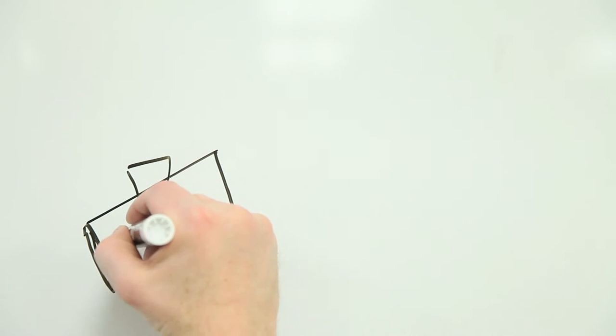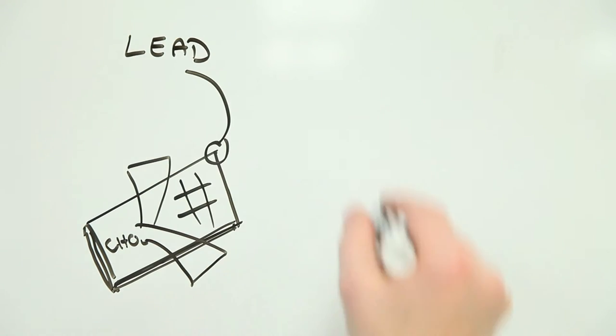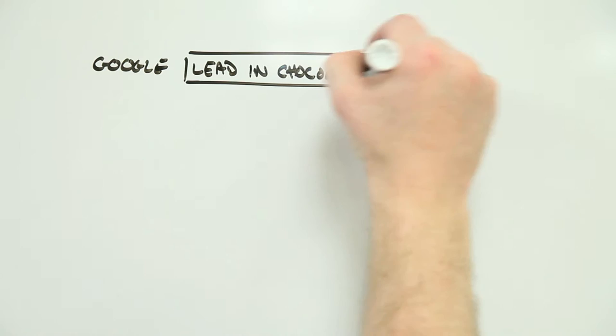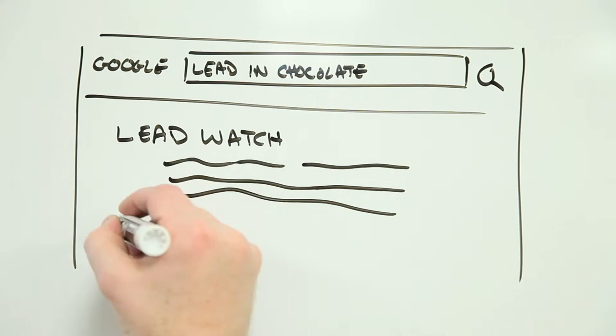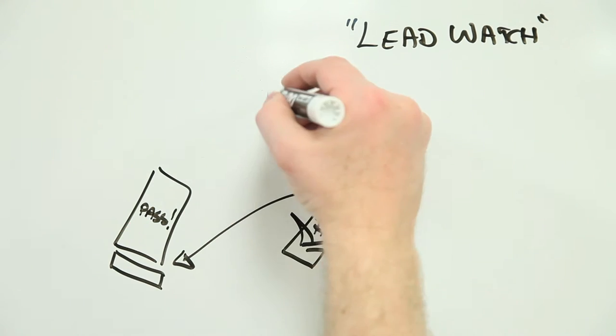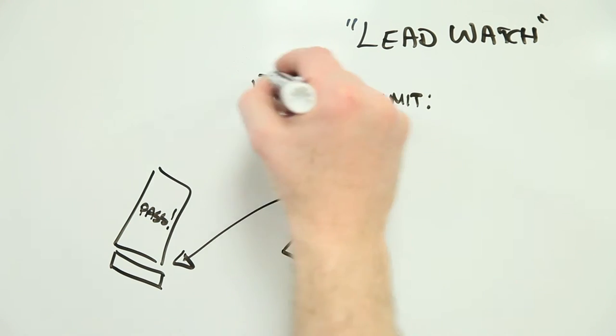Imagine you've heard that some chocolate contains the toxic metal lead, which some does, by the way. As an avid chocoholic, you do a quick Google search and come across LeadWatch. LeadWatch is a device that plugs into your smartphone and tells you whether the lead in your chocolate is above the acceptable level.